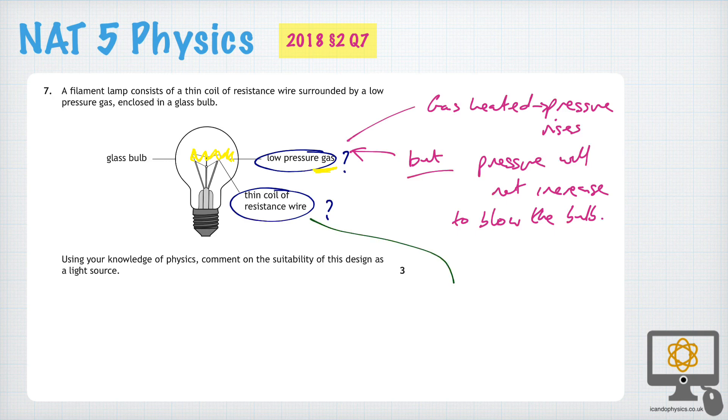Okay, so the second thing is the thin coil of resistance wire. Now, the important thing here is that a thin wire means high resistance.